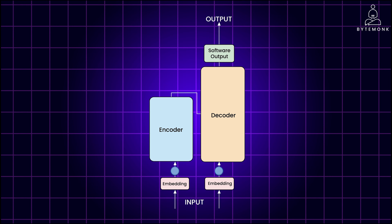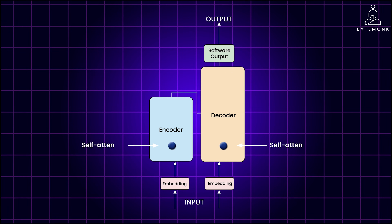When feeding words into the encoder or decoder, we add positional encoding to their respective word embeddings. This helps the model understand the order of words, as transformers don't process them strictly sequentially like older models. Next, the combined vectors — word embedding plus position — enter the self-attention layer, where the model analyzes how different words in the input sentence relate to each other. This process learns attention weights indicating how much each word should pay attention to all other words, boosting those that are more relevant.